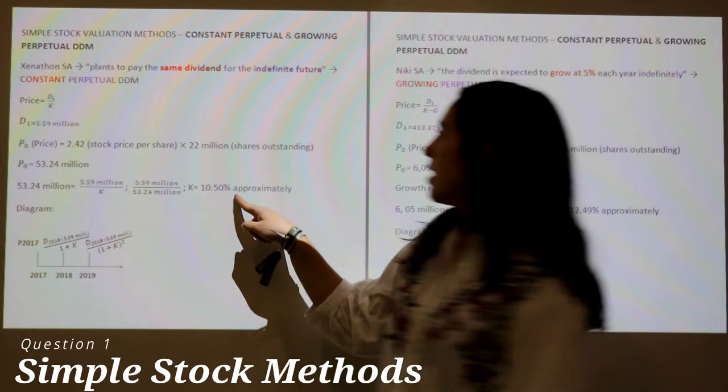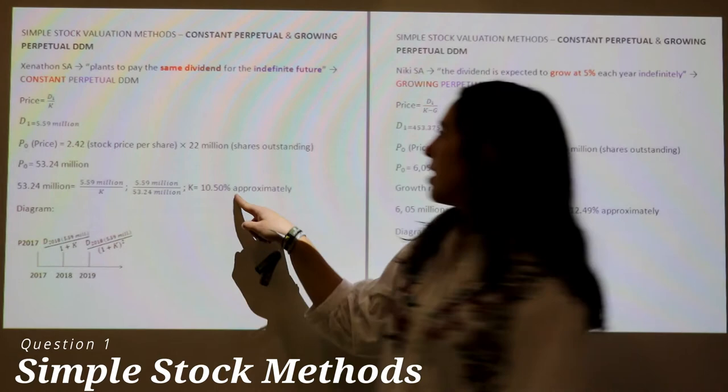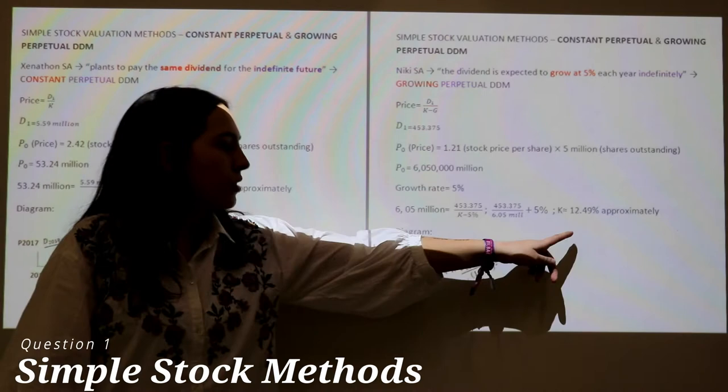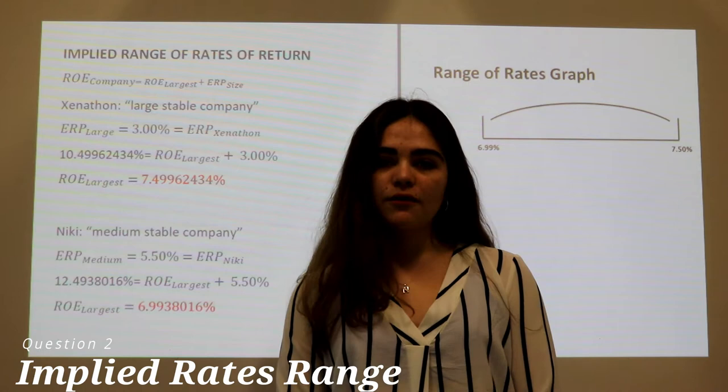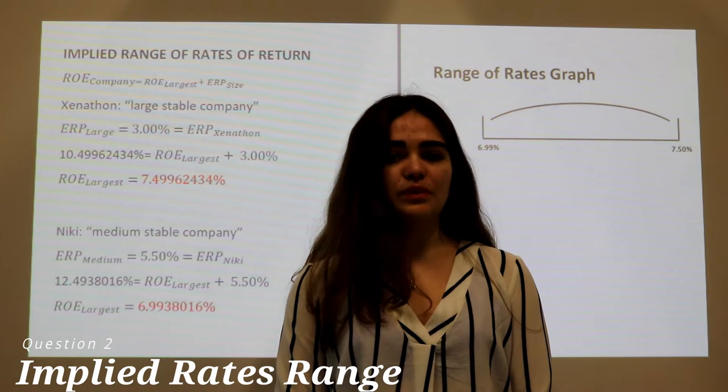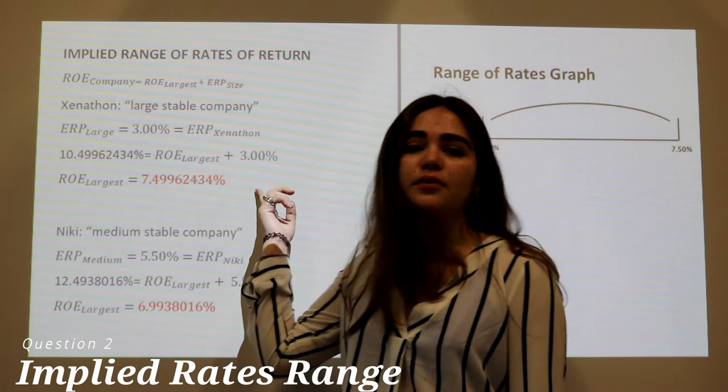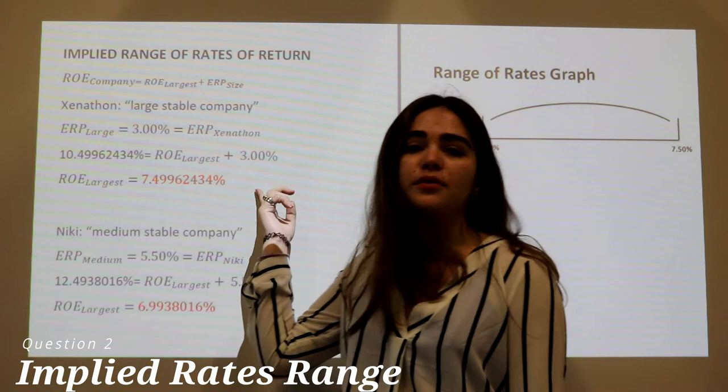While for Niki, we used a growing perpetual DDM, which resulted in an approximate rate of 12.49%. We calculated the implied rate of return of the comparable companies, which is equal to the return on equity minus the equity risk premium of both companies. Senator's rate is approximately 7.50% and Niki's is approximately 6.99%.